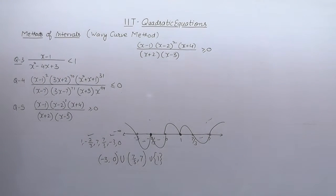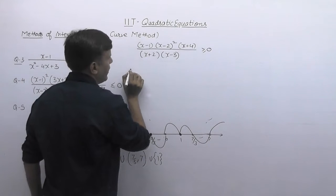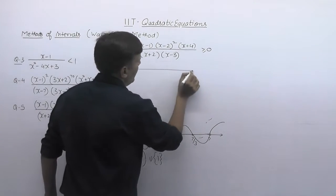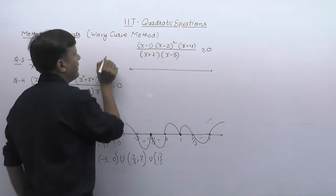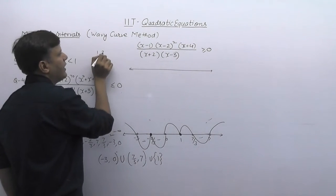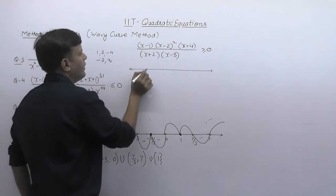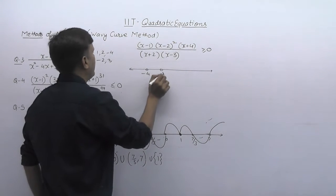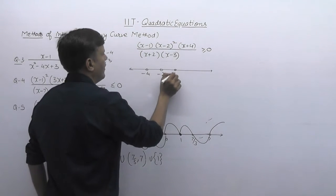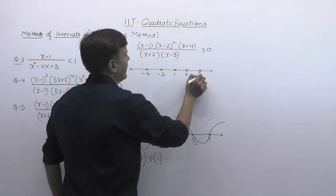Factorize — so you have critical points. I see critical points: 1, 2, -4, -2, 3, -4, -2, 1, 2, 3.